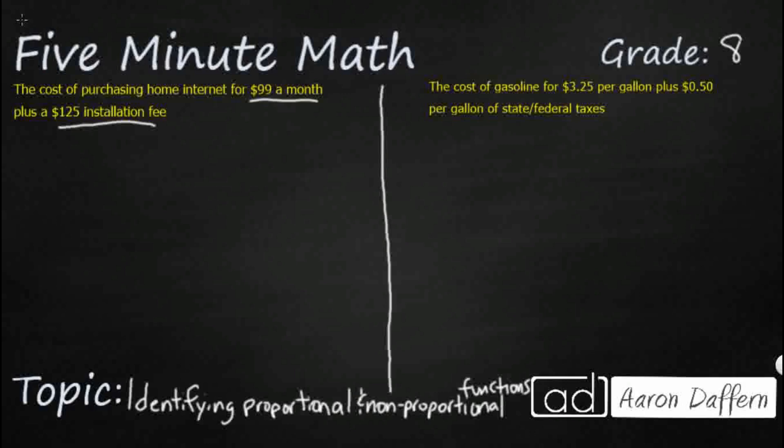it would probably look like slope-intercept form. So we've got per month, right? So that's going to be our independent variable.